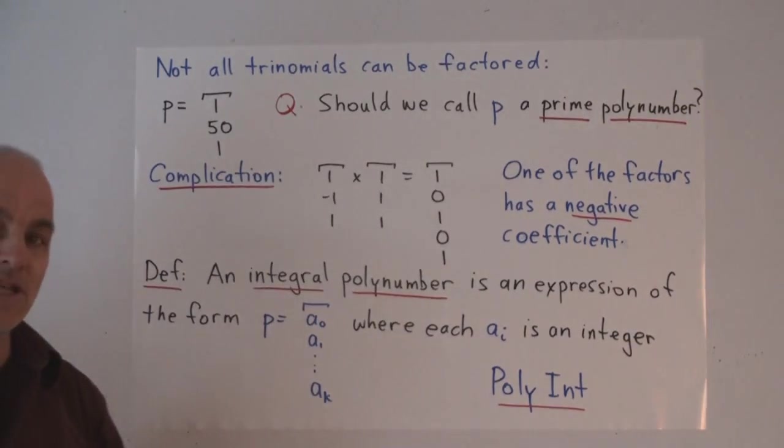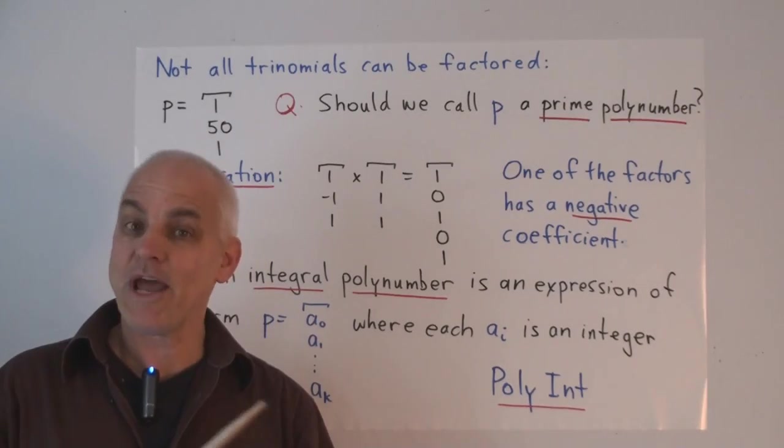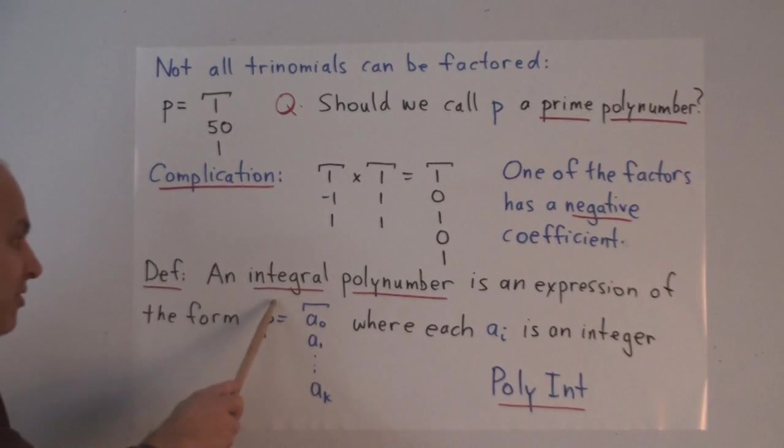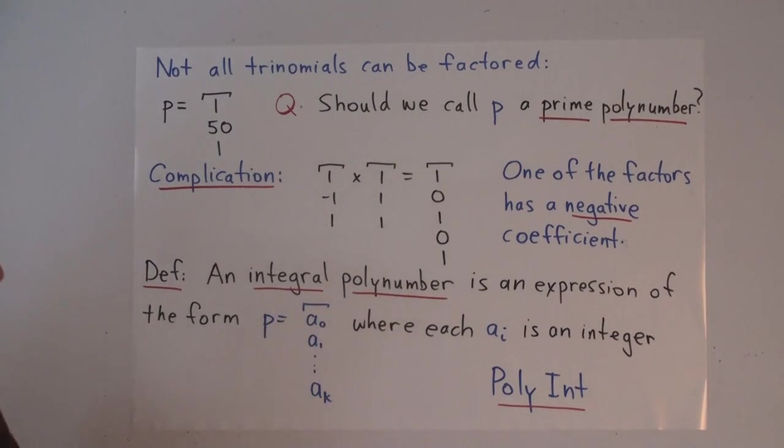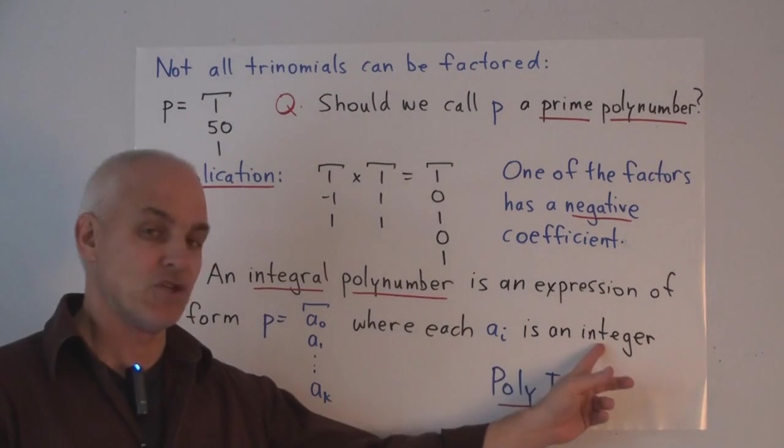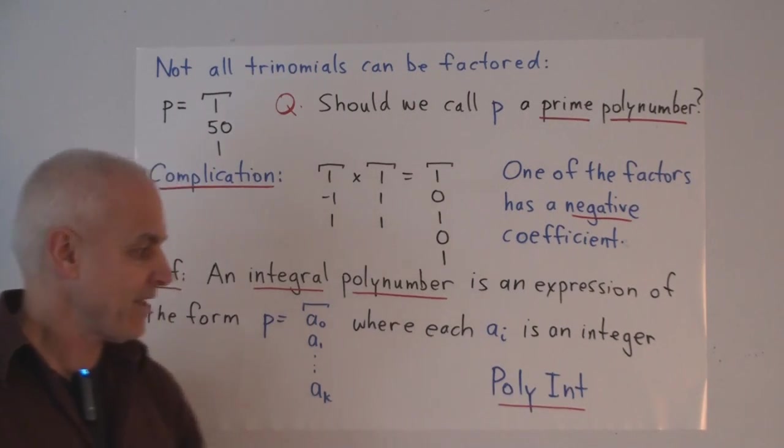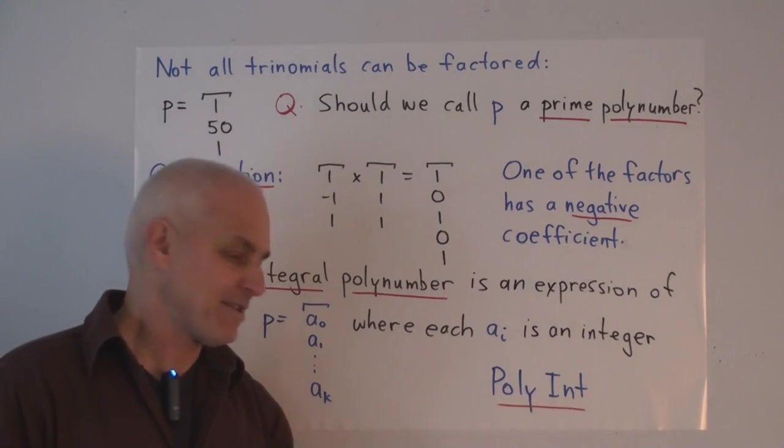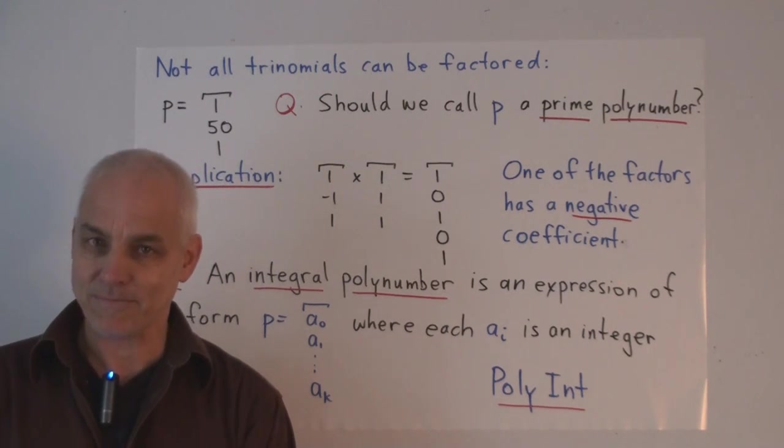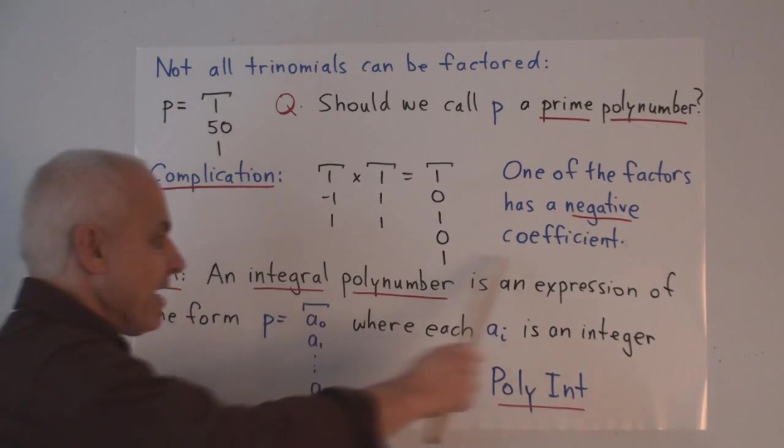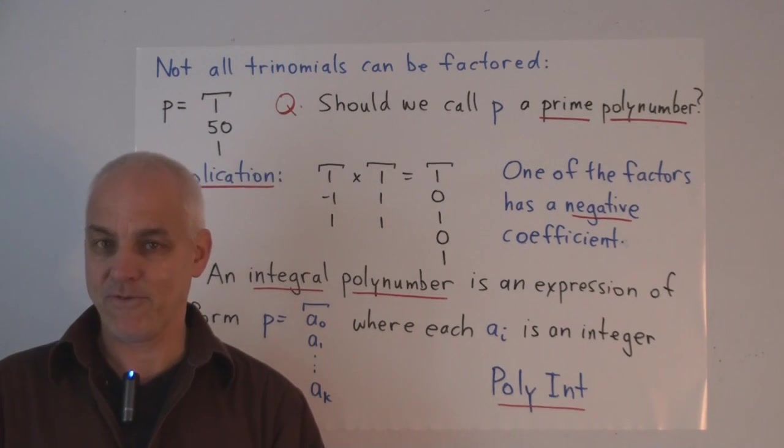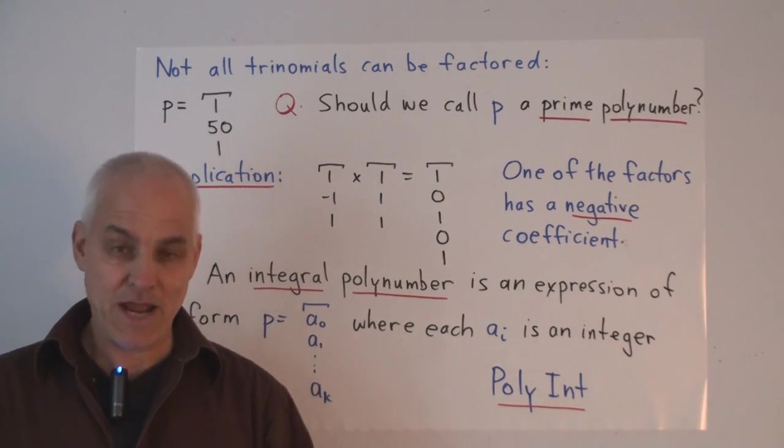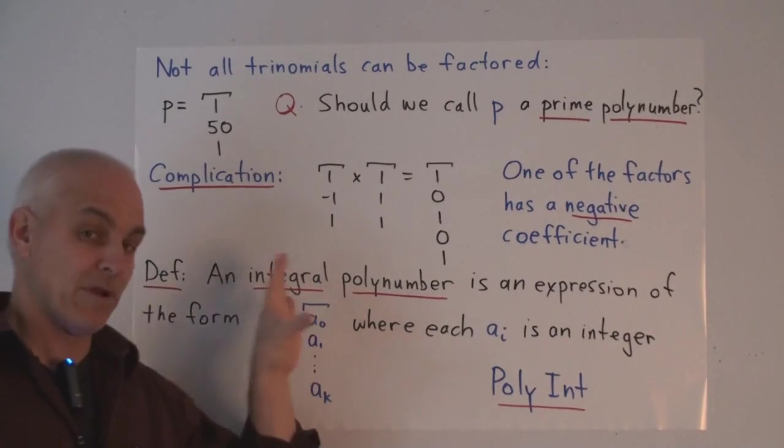Certain factorizations are possible with negative coefficients, which are simply not possible if you restrict the positive coefficients. So the mathematics is forcing us to enlarge our view. We're going to have to move from positive polynumbers to talking about integral polynumbers. And what is an integral polynumber? It's an expression just like a positive polynumber, except that the entries are allowed to be integers. This defines a new mathematical object called an integral polynumber. And we'll give it this title, polyint, for integral polynumber.